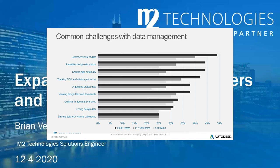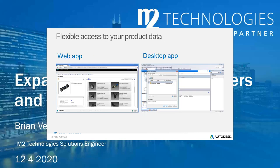Let's take a look at some of the capabilities of the Vault Office product. It provides a couple of different access options. The first is a web application — we refer to that as the Vault Thin Client. What's nice about this is that it really requires no software at all in order to get access to the files. You just open up a web browser, go to a link configured for your Vault, and log in. Once logged in, you can search, view, and even markup designs, see all the property information, and check files in or out.